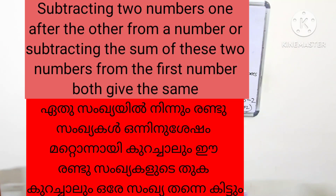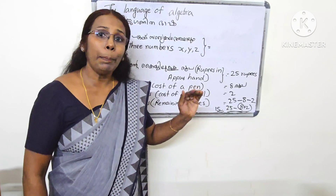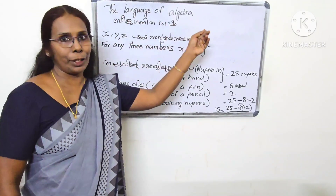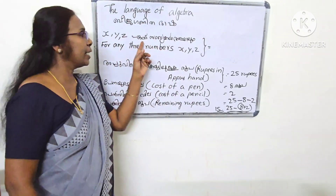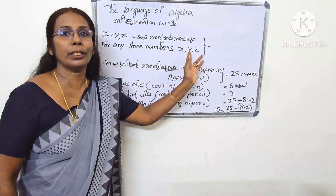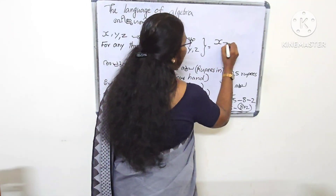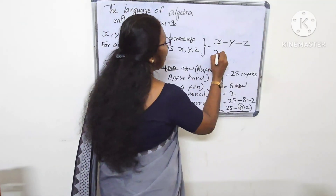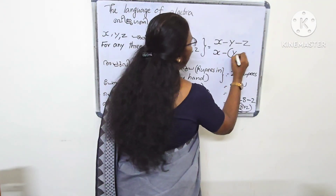Subtracting 2 numbers one after the other from a number, or subtracting the sum of these 2 numbers from the first number — both give the same result. This is the language of algebra.